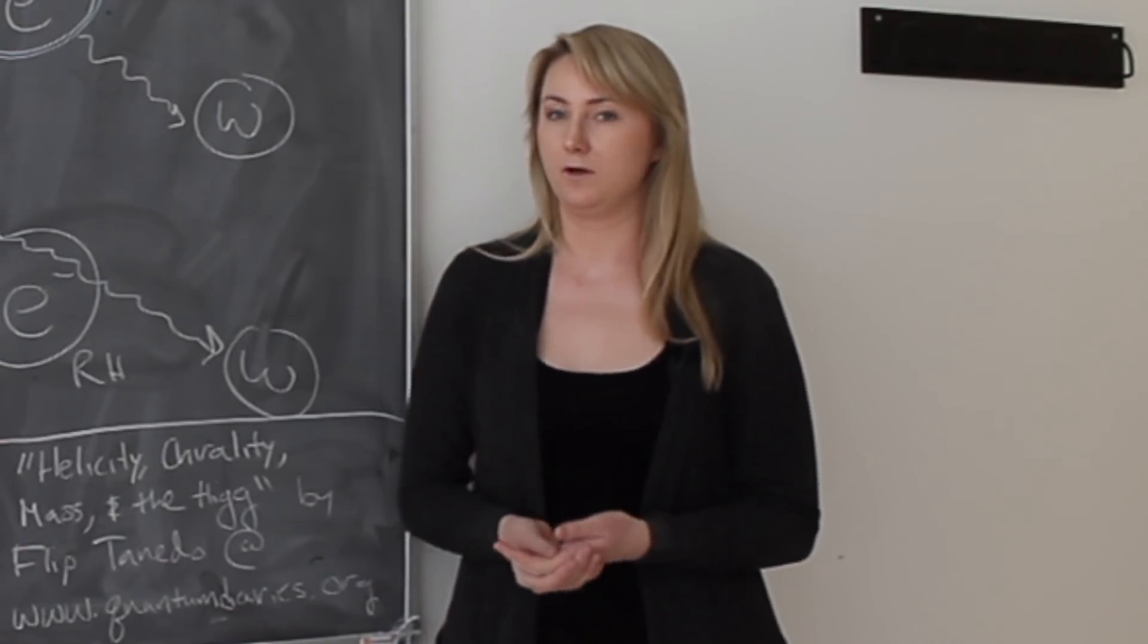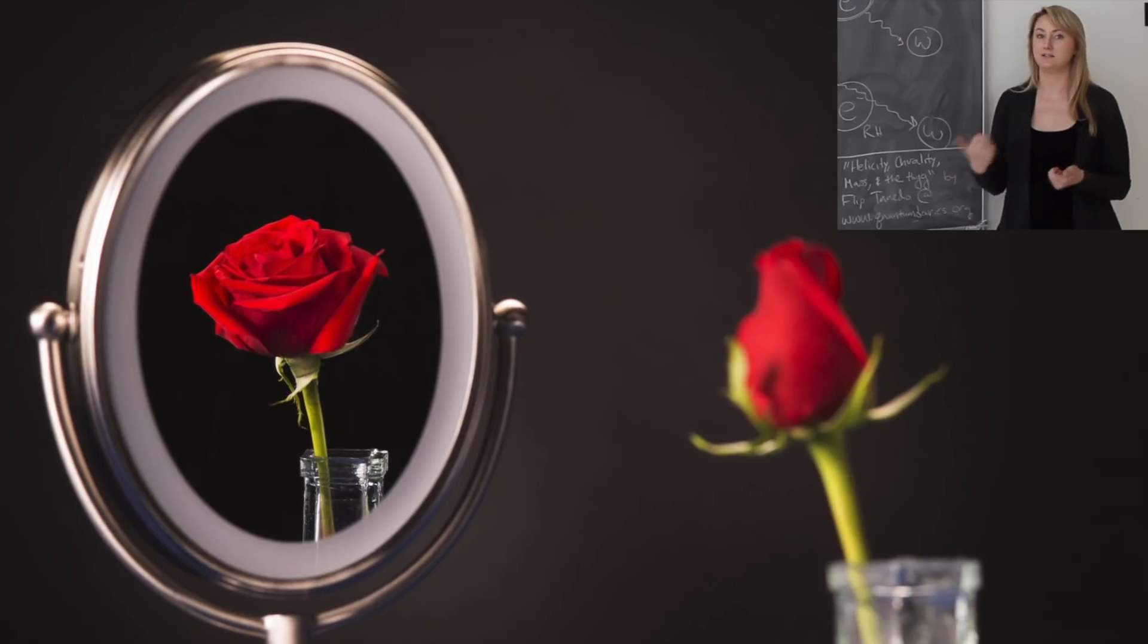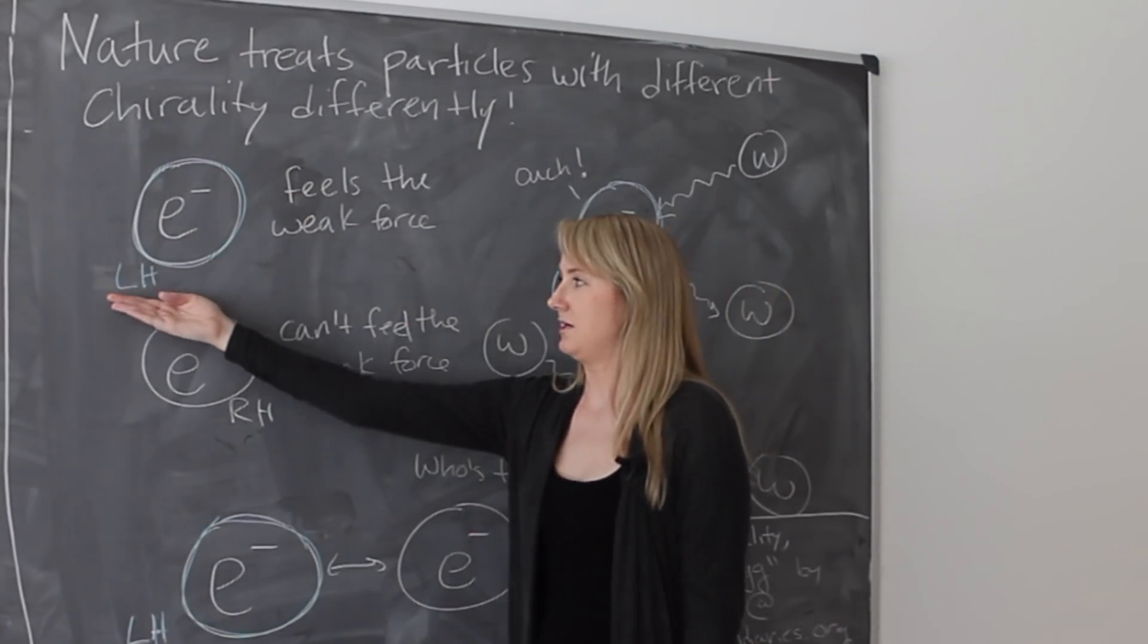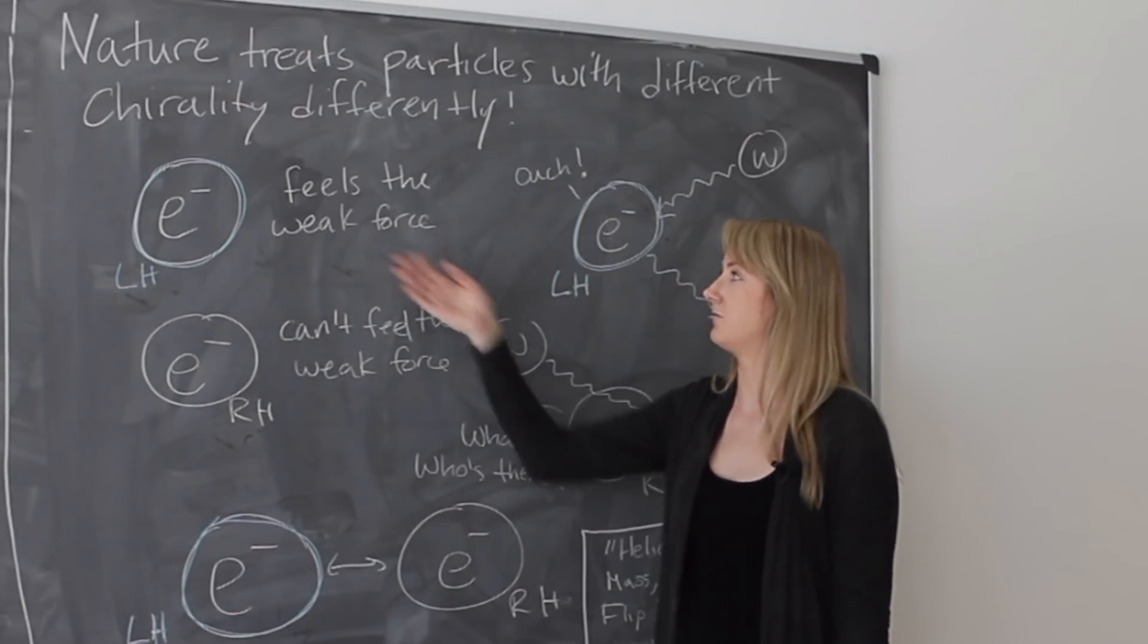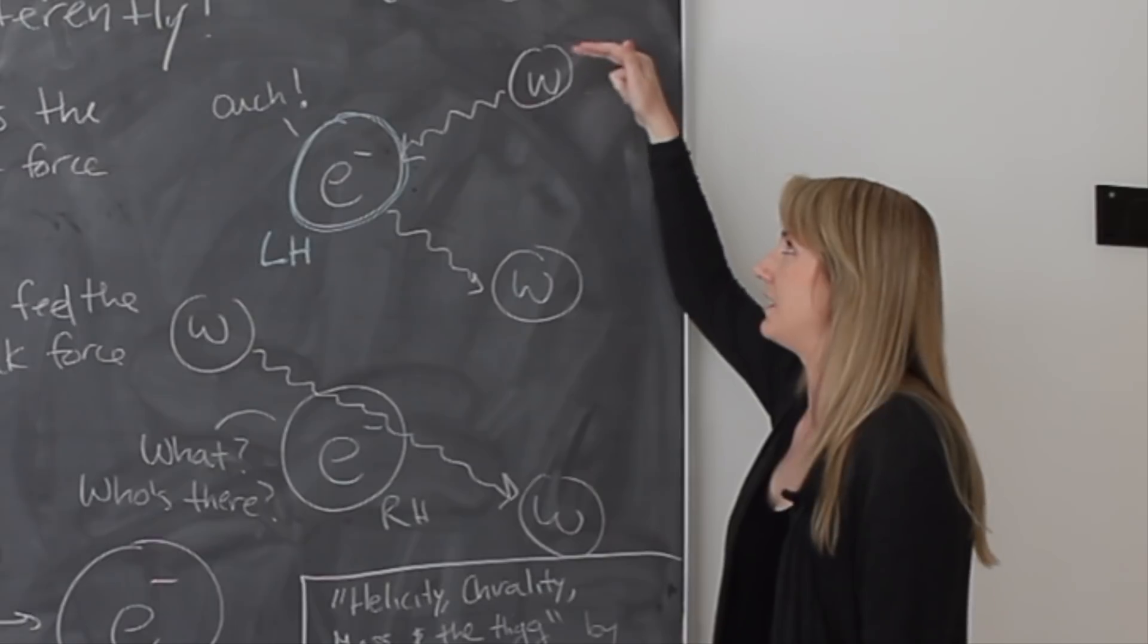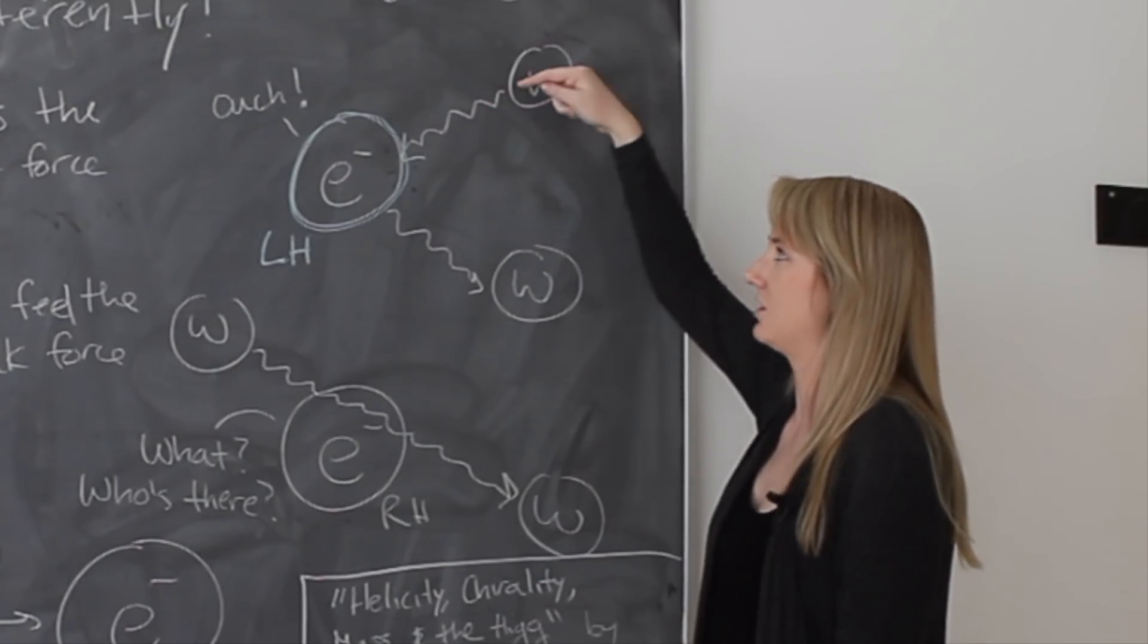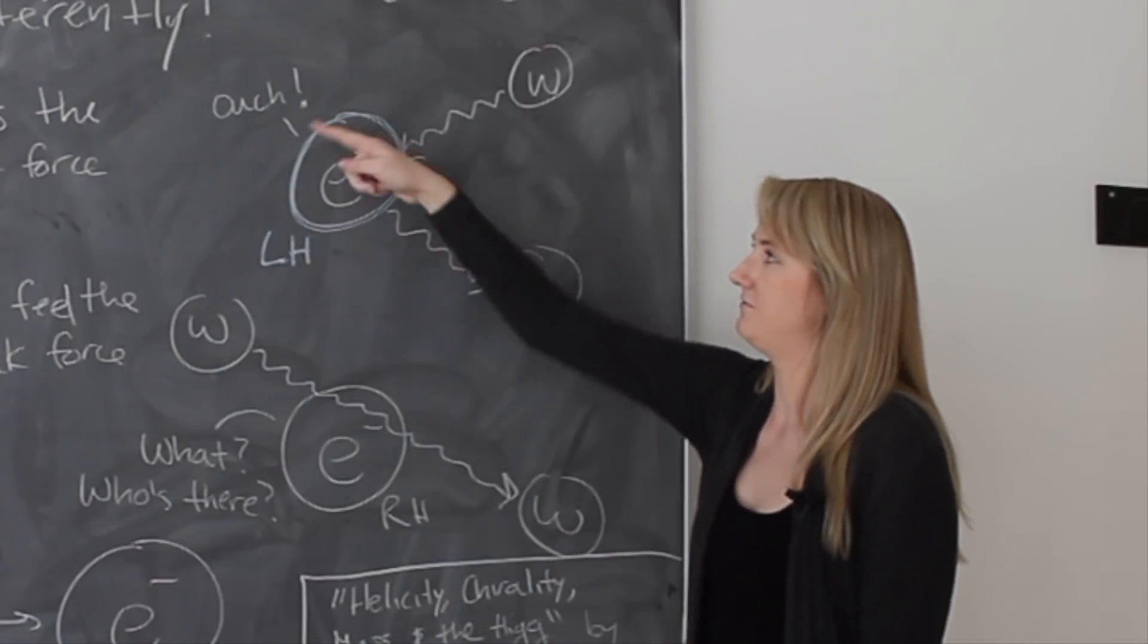So an interesting thing about the world is that nature actually treats particles with different chirality differently. For example, let's take the electron. If this electron is left-handed, then it feels the weak nuclear force. The weak force carried by the W, if it sees the left-handed electron, it interacts with the left-handed electron, and the left-handed electron felt the interaction.